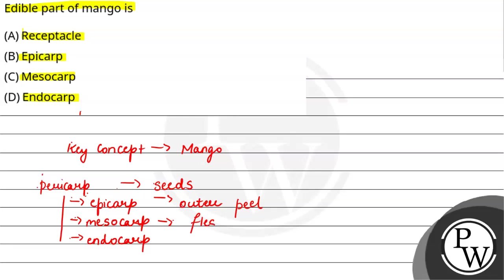Mesocarp forms the fleshy pulp, which is the inner part of mango and is the thickest. Endocarp forms a hard shell to enclose the seed. It is because of this that mango is placed in the category of drupe fruits.